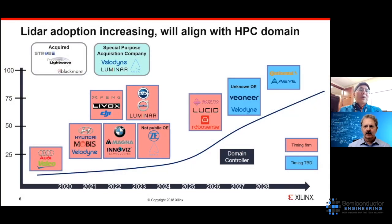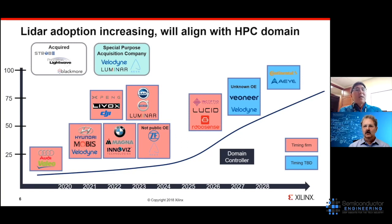This is a graphic we put together to show where we see the LiDAR market today. At the top, we've tracked that certain companies like Strobe, Princeton Lightwave, and Blackmore have been acquired by other entities. There are also several companies like Velodyne, Luminar, and Ava that have gone through a SPAC — a special purpose acquisition company — to go public. Those companies are working with many of the companies shown in the red and blue boxes, where red indicates firms with committed OEMs.